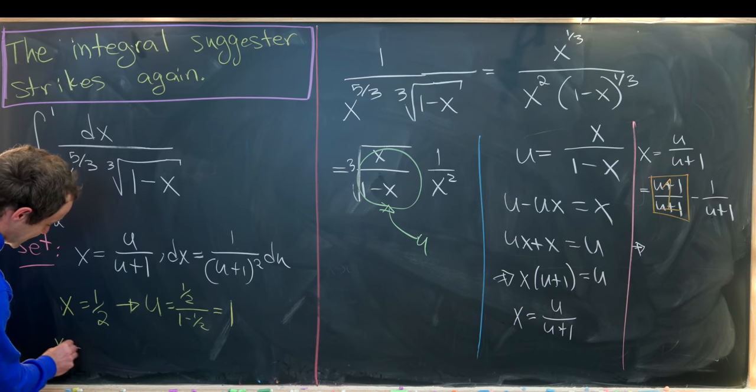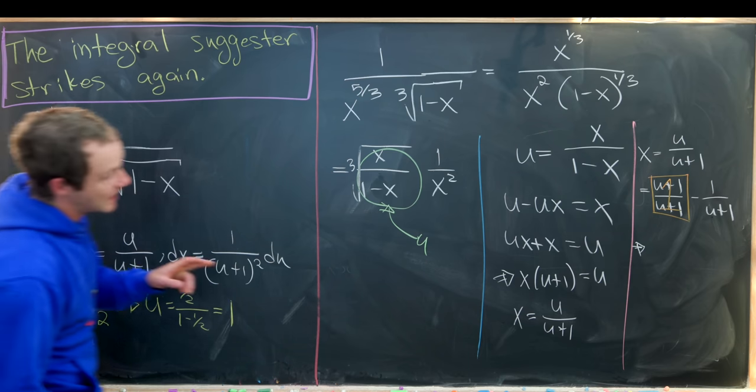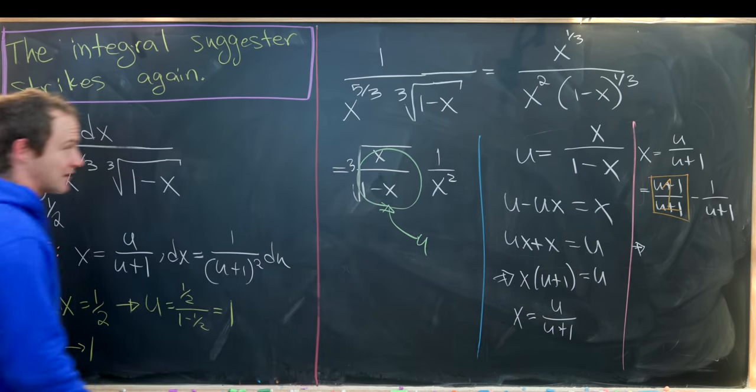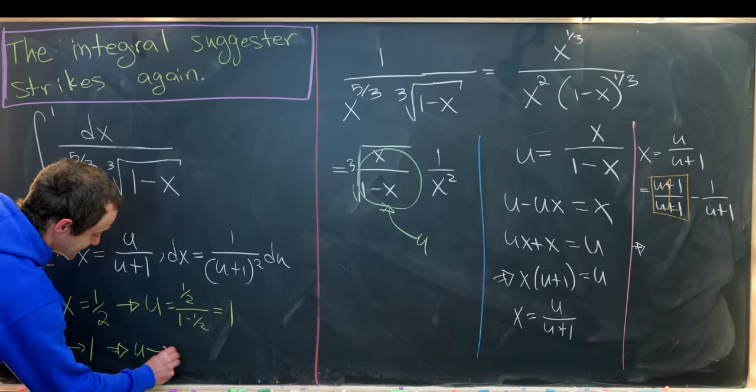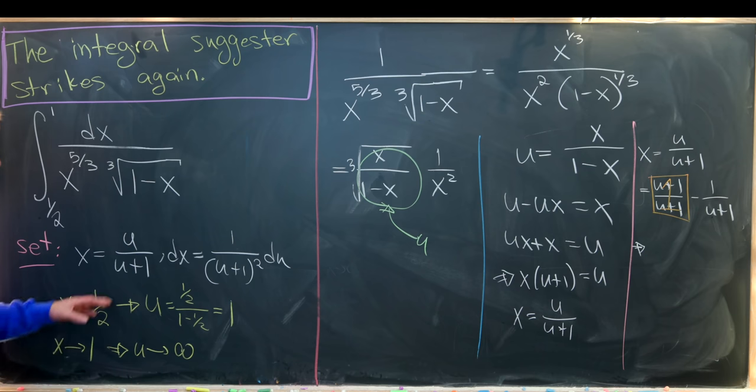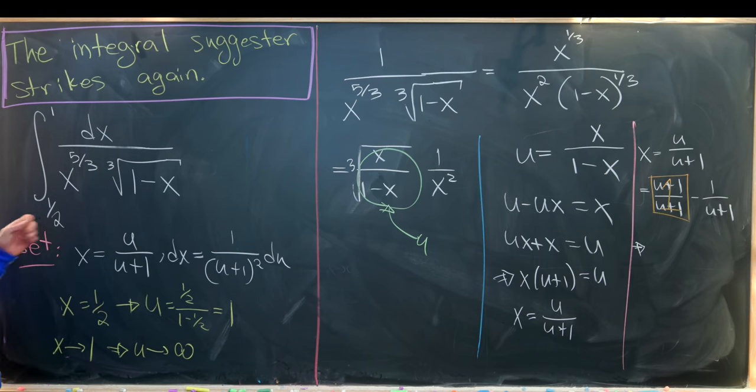And then if x is approaching 1, notice we must let x approach 1 because we have a 1 minus x in the denominator of our definition of u. Then that tells us that u is approaching infinity. So that means our new lower bound in the u integral will be 1, and the new upper bound will be infinity.